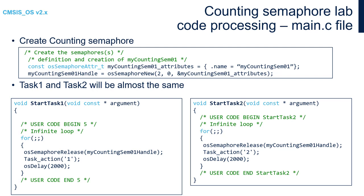At the end, move the task to blocked state for 2 seconds using the OSDelay function. Then similar operations should be done in the StartTask2 function, with the only difference that this time we will send '2' over SWO using the TaskAction function. Please notice that there is no timeout within semaphore release functions. So in case the semaphore is already released or contains the maximum number of tokens, the function will not wait but will just return an error code. This is why in more complex examples it is important to check the return values of those functions. In our simple example there is no risk that the semaphore will be full.